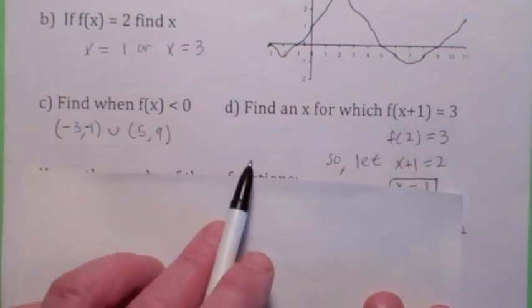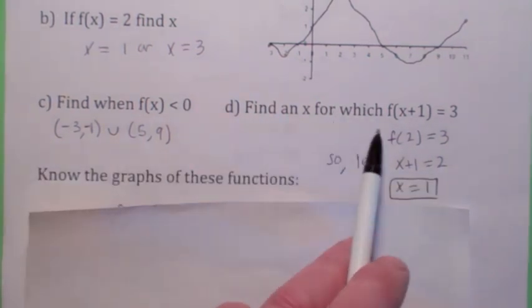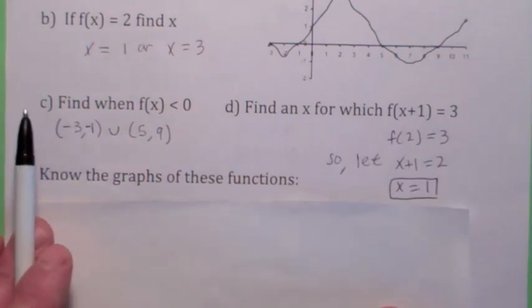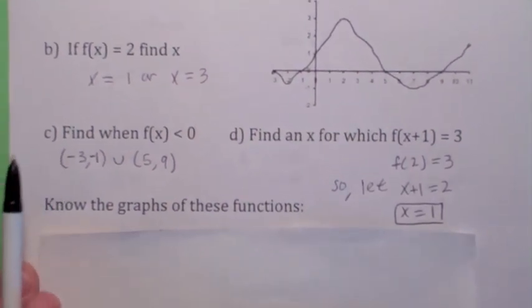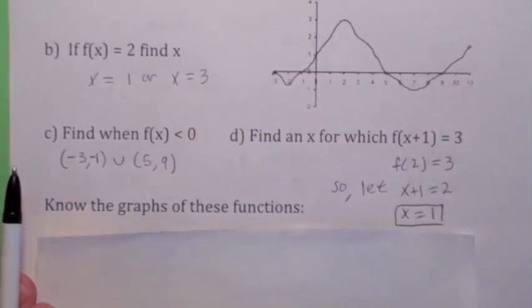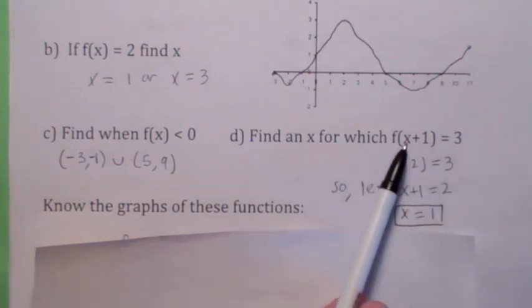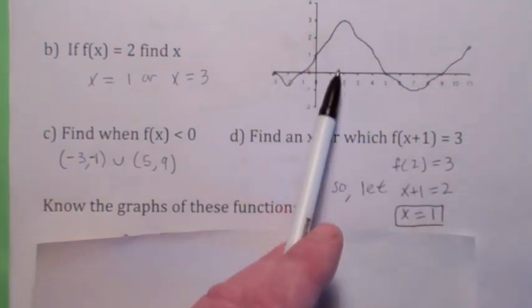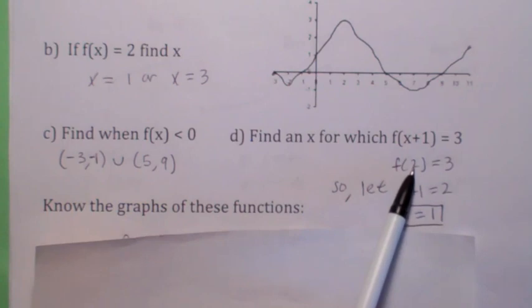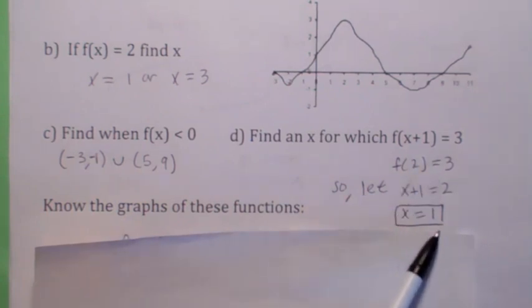Find an x for, this is a hard one, I guess. Find an x for which f of x plus 1 is 3. So, I want to find an x value so that if you add one to it and plug it into the function, you get 3. Well, we know that f of 2 is 3, right? So, how about just letting x plus 1 be 2? Then f of 2 would be 3, but what would x be? x would be 1. Interesting, huh?